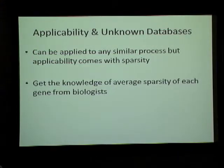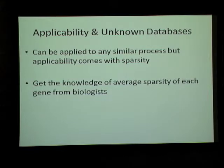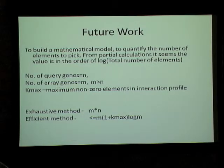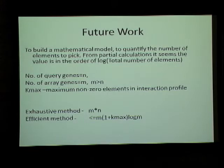This method can be applied not only to query-array gene problems but to any general scientific problem where there is sparsity in a process and where correlation measurements are done to find similarities. In unknown biological databases, the average sparsity of each gene can be estimated from expert biologists and then this method can be applied. For future work, a mathematical model needs to be built to quantify how many genes to pick. From naive calculations it seems to be on the order of log of the total number of elements, compared to m×n experiments for the exhaustive method, but this needs further verification.